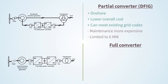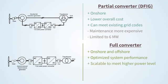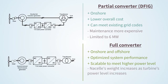On the other hand, the permanent magnet synchronous generator can be used on onshore and offshore turbines, has an optimized system performance and is easily scalable to meet higher power levels. The downside is that nacelle weight increases as the turbine's power level increases and cost is higher than DFIG turbines.